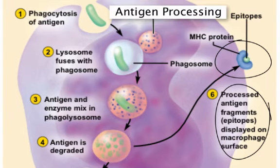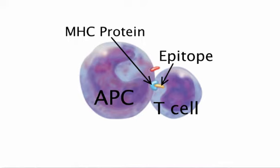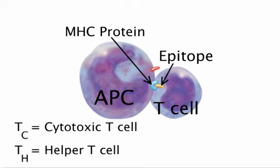The antigen-presenting cell will usually display the antigen's epitopes to the T-cells in the nearest lymph node. Cytotoxic and helper T-cells patrol the lymph nodes, seemingly waiting to encounter an antigen-presenting cell that is displaying an antigen. When they do, they initiate an immune response.